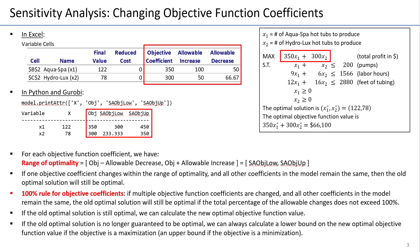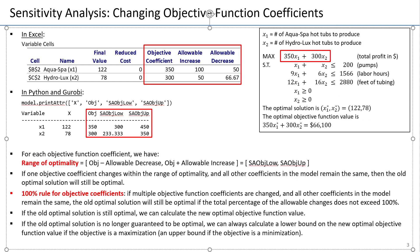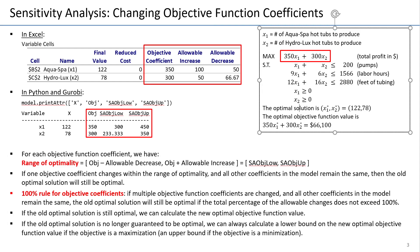Sensitivity analysis here focuses on the objective. I will always keep the whole model that we're analyzing — the product mix problem where we're producing two products, AquaSpy and HydroLux — maximizing profit and trying to limit the use of three resources. The optimal solution originally obtained is 122 AquaSpy and 78 HydroLuxes produced per week in order to maximize profit. When you plug in this optimal solution into the objective, you obtain a total profit of $66,100 per week, which is the maximum value achievable.